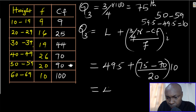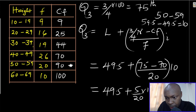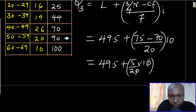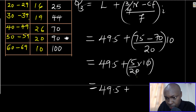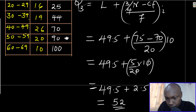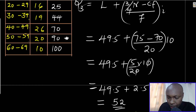Working through the calculation: Q3 = 49.5 + [(75 - 70) / 20] × 10 = 49.5 + [5/20] × 10 = 49.5 + 2.5 = 52. So the upper quartile Q3 = 52.